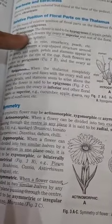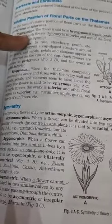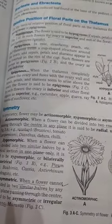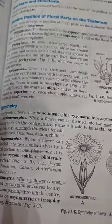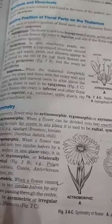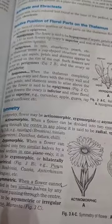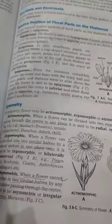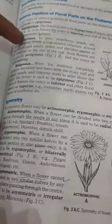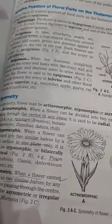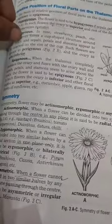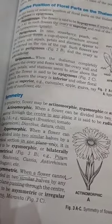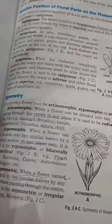A hypogynous flower is one in which the sepals, petals, and stamens arise from below the ovary — the ovary is in the upper position. Examples include tomato and mustard plants. In a perigynous flower, there is a cup-like structure, and the sepals, petals, and stamens arise from the rim of the cup.